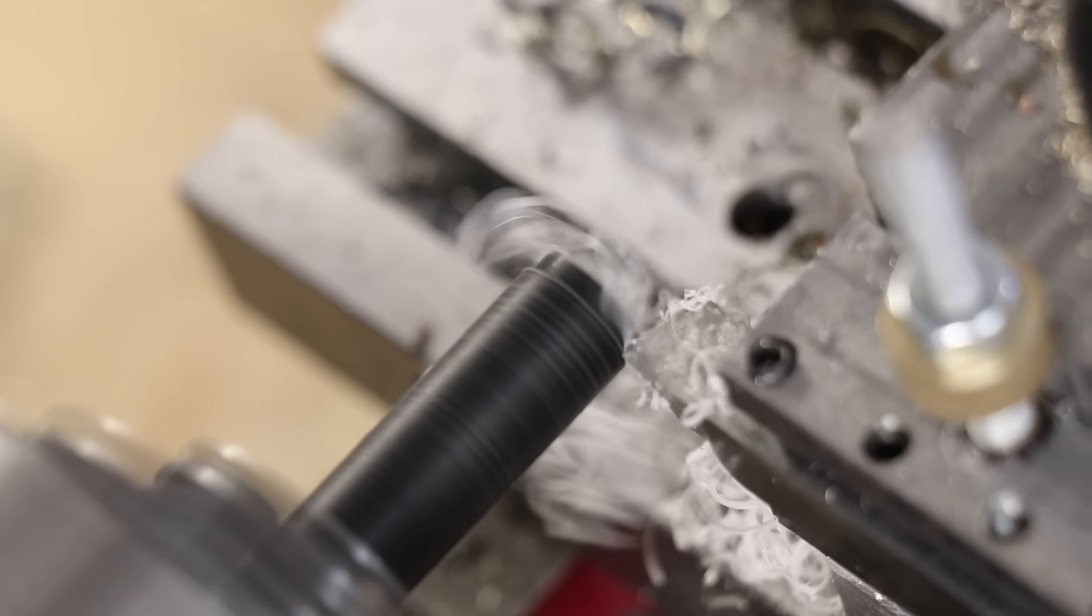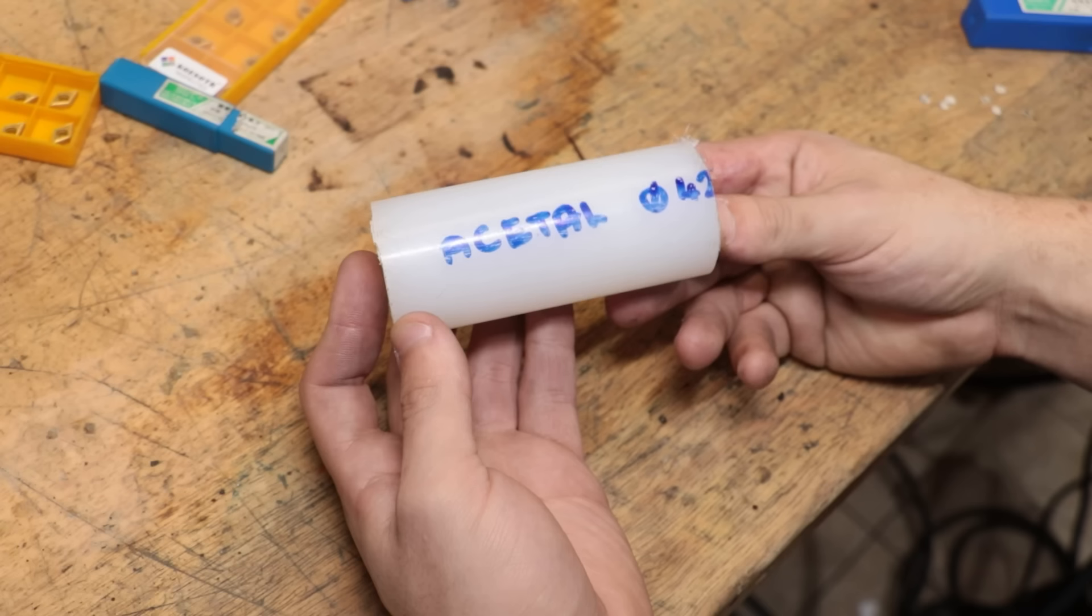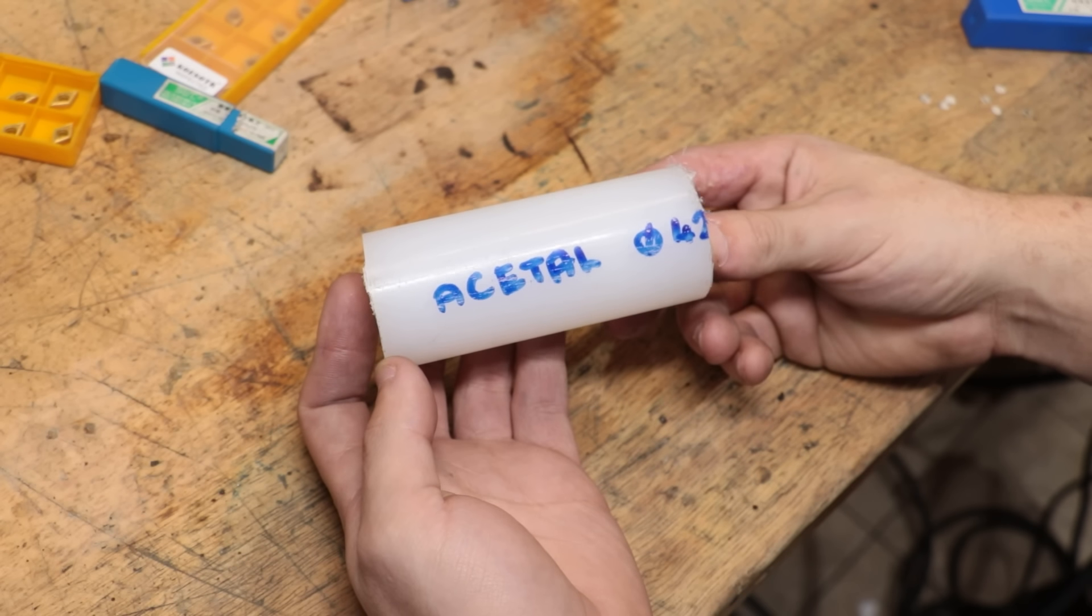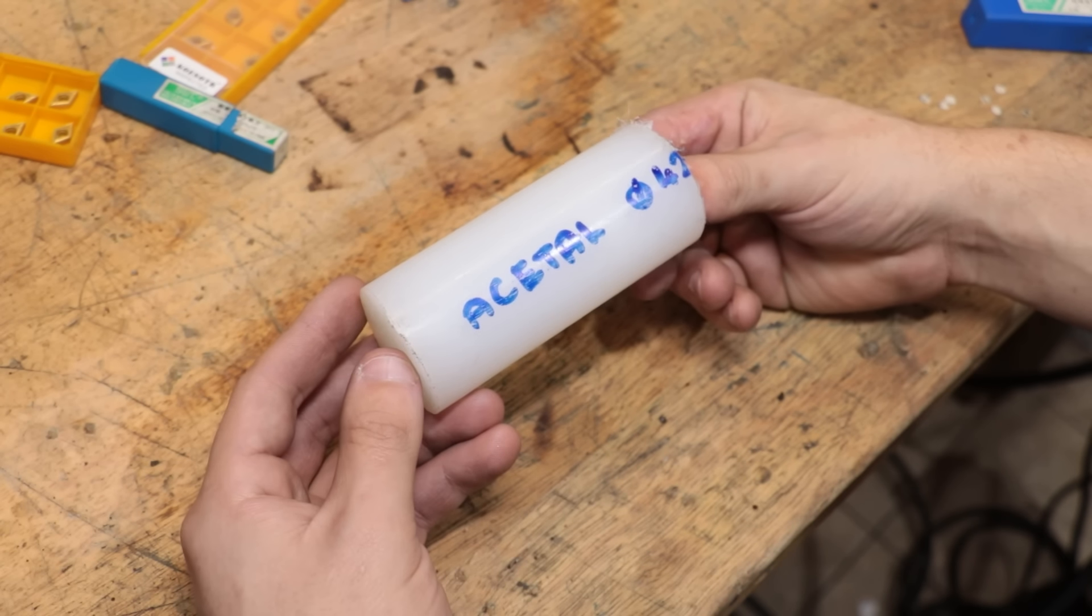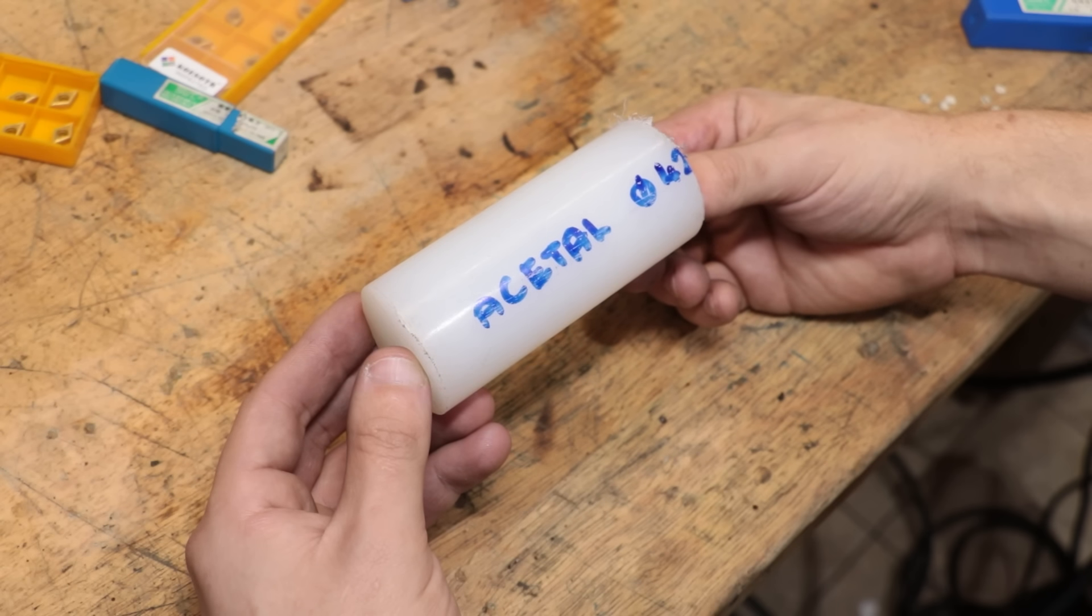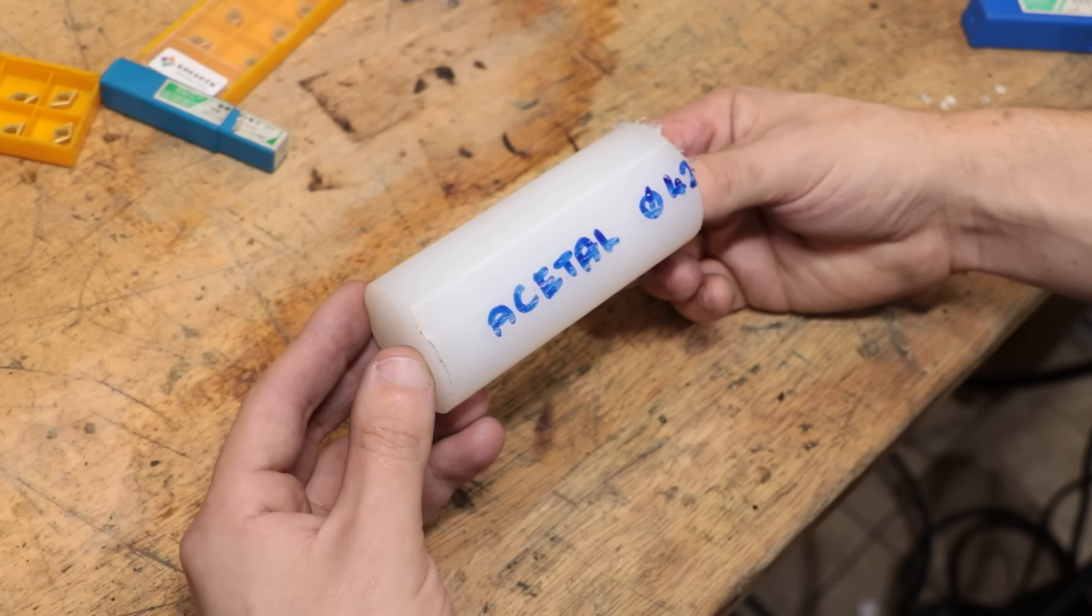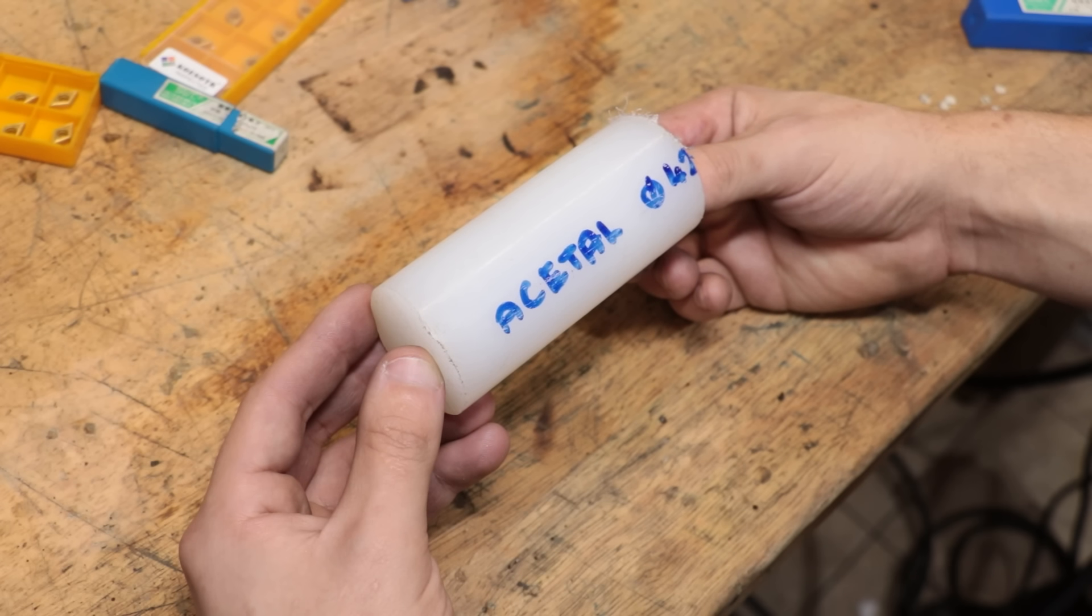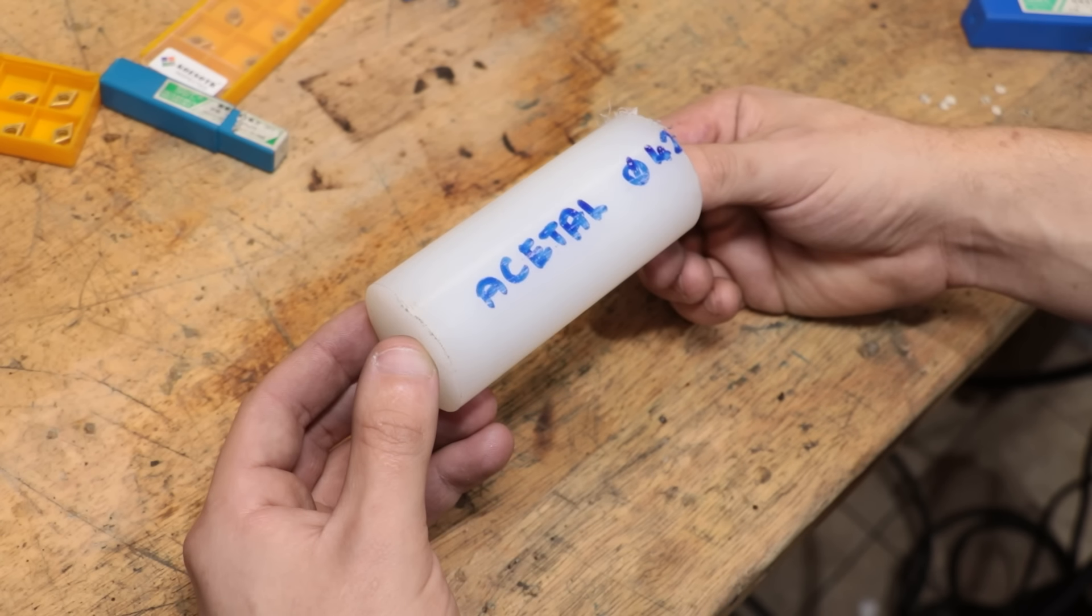And that can be really important when you're machining plastics. Less or so with acrylic, because you can polish it, but when you're machining something like acetal, having a razor sharp cutter can be important. Because generally speaking, the finish that you get with acetal is the finish that you're left with. You can't really polish it, so having a sharp cutter will give you the best surface finish.